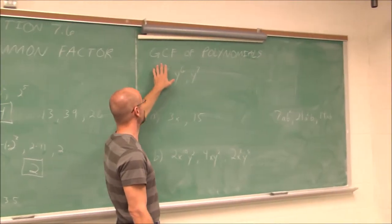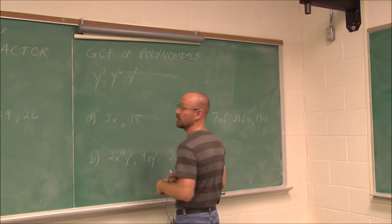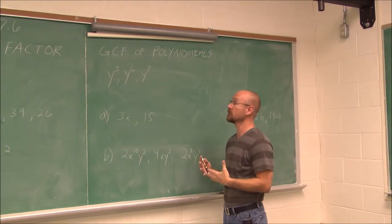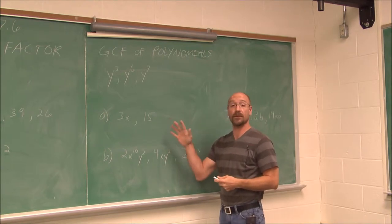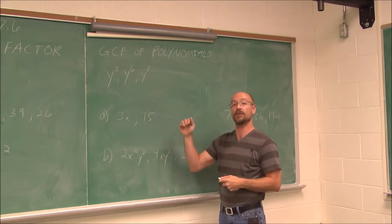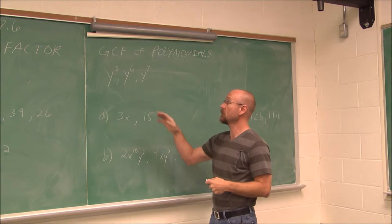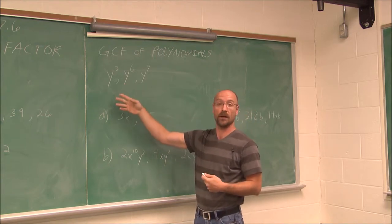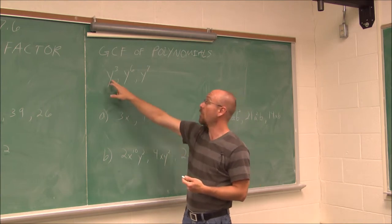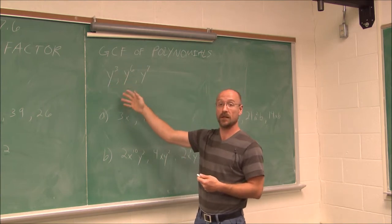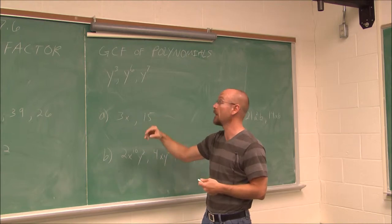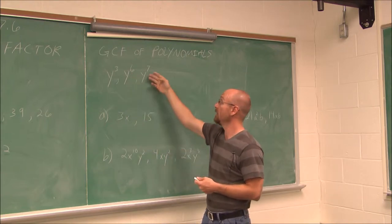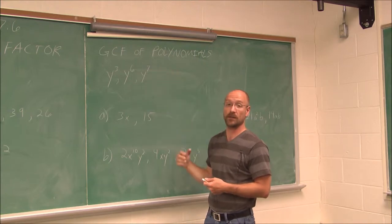Now we're going to look at the greatest common factor of polynomials. Because we have variables, we have to assess them the same way. Honestly, I feel that the variables are easier to factor than the numbers, because we have to treat these as prime numbers since we don't know what they are — we can't really break them down. y cubed is just y times y times y, three factors of y. y to the sixth is six factors of y, and y to the seventh is seven factors of y.